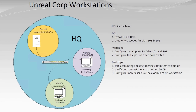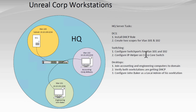All right, so let's jump into the switching configuration for this lab. We're moving on to Unreal Corp workstations. We need to get the accounting and engineering workstations on the domain. We need to add an IP helper address configuration to the Cisco switch that'll forward broadcasts in these VLANs as unicasts to DC1. We need to configure the switch ports for these two machines to be in VLAN 101 or 102.